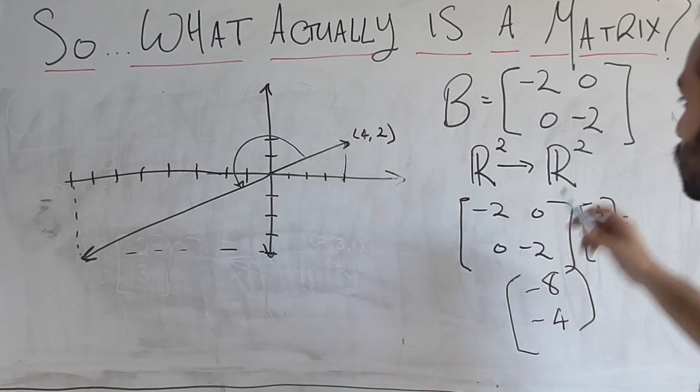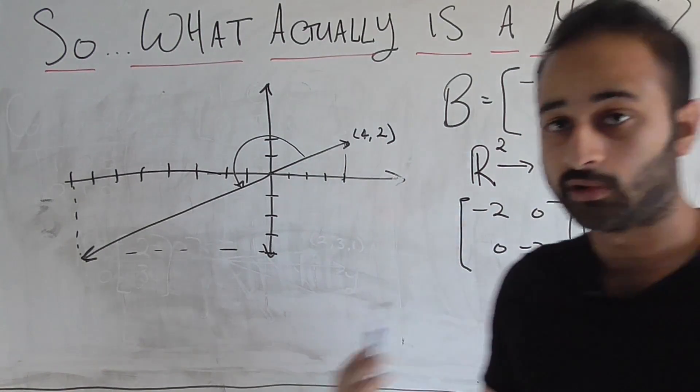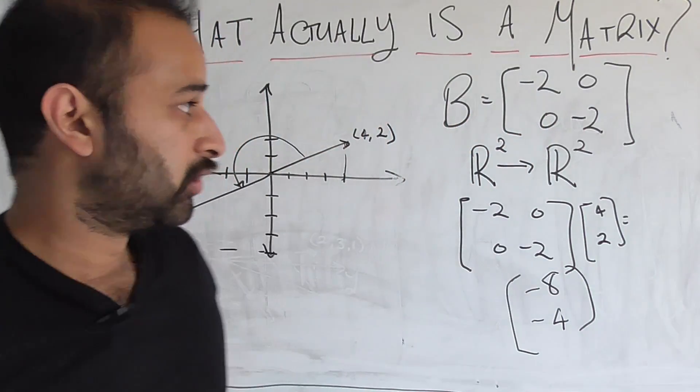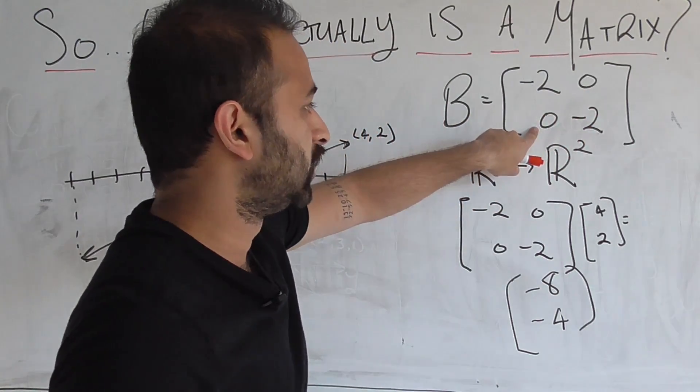And you can see why that's the case if you look at matrix B. The double the length part is the easier one to see. You see that there's two here. So it's going to double every single coordinate that gets put into there.